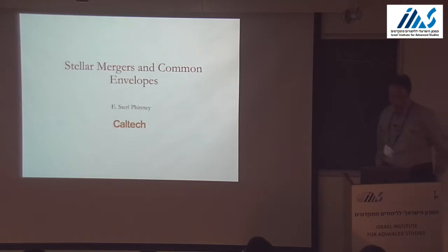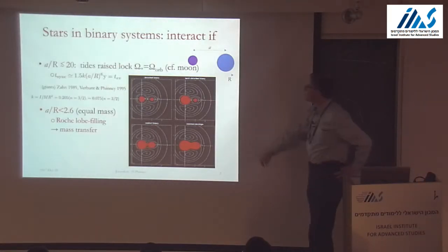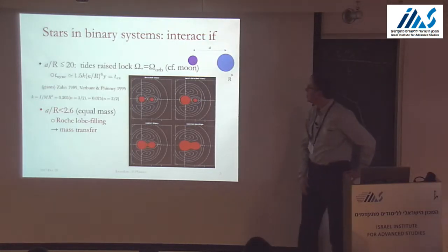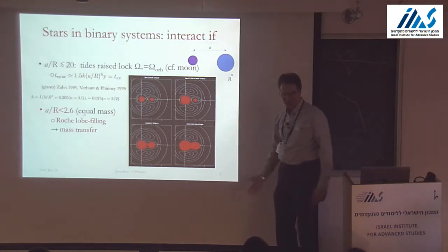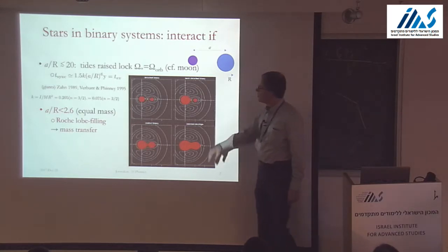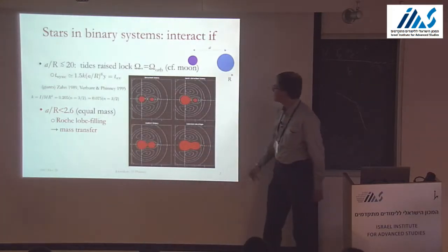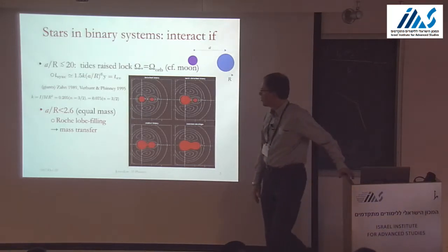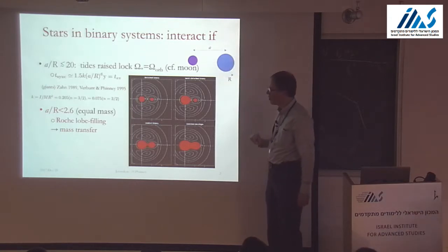Let's start by talking about what happens when you have binary stars. Binary stars can begin to interact if a star of radius R is separated from another star by a semi-major axis A — we'll pretend they're all circular for the moment. If they're close enough, they circularize through tidal interactions. If the ratio A over R is less than about 20, and the star has convective layers in the outer parts like the Sun or red giants,